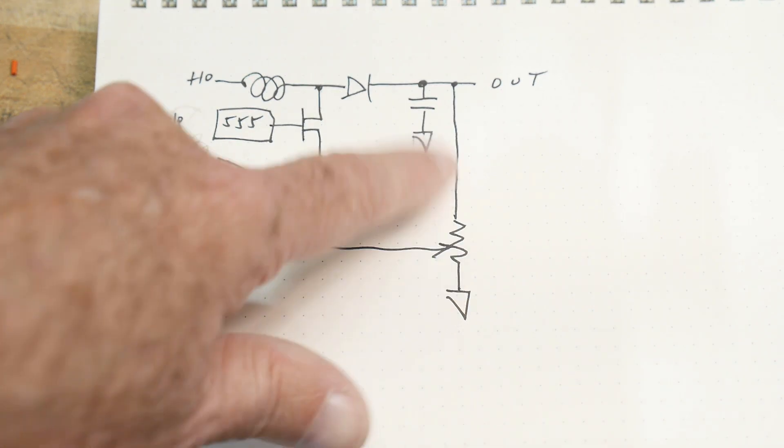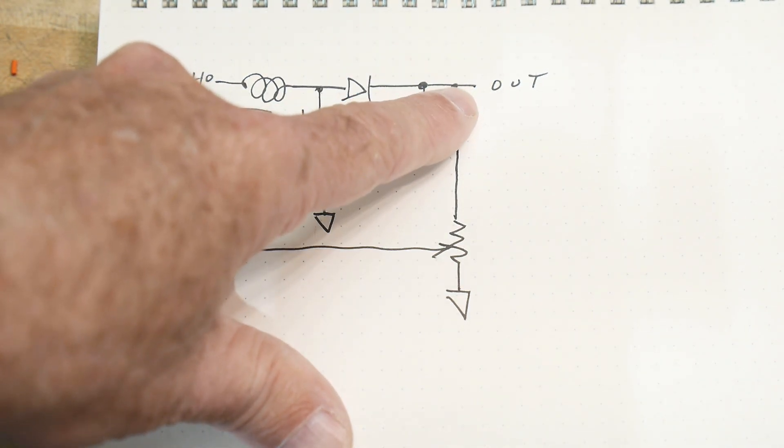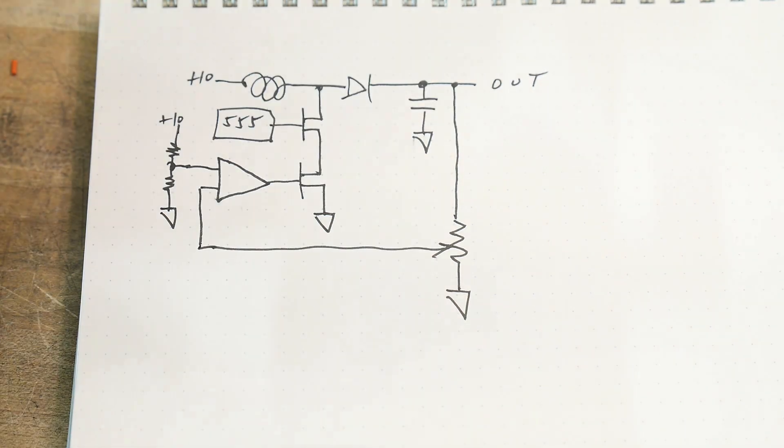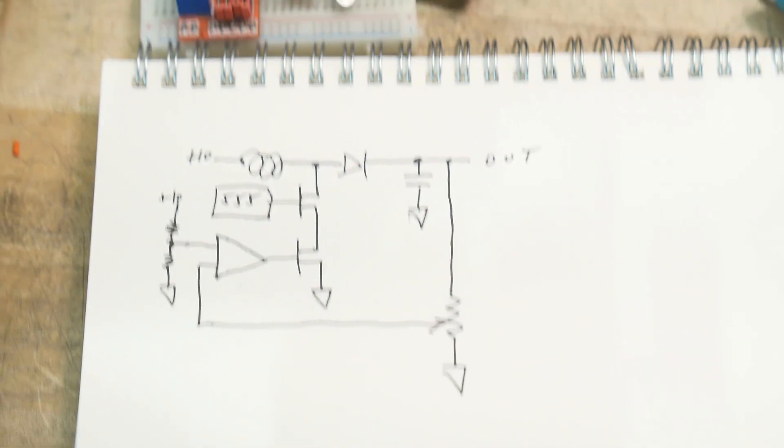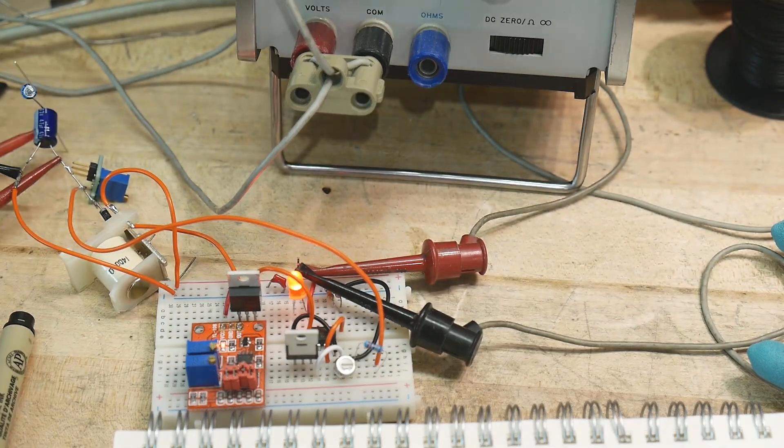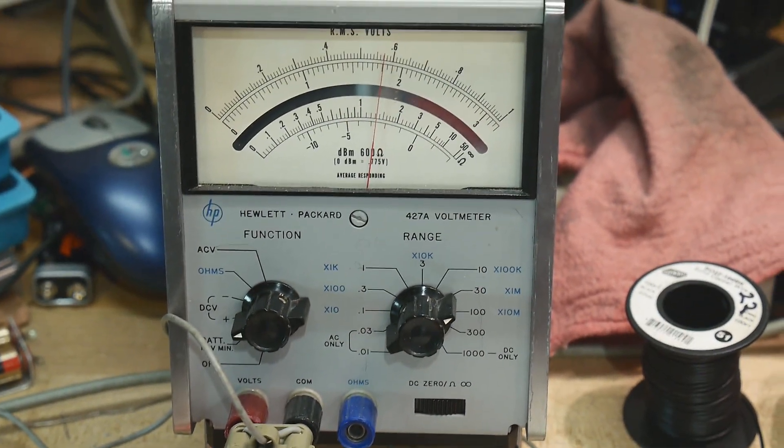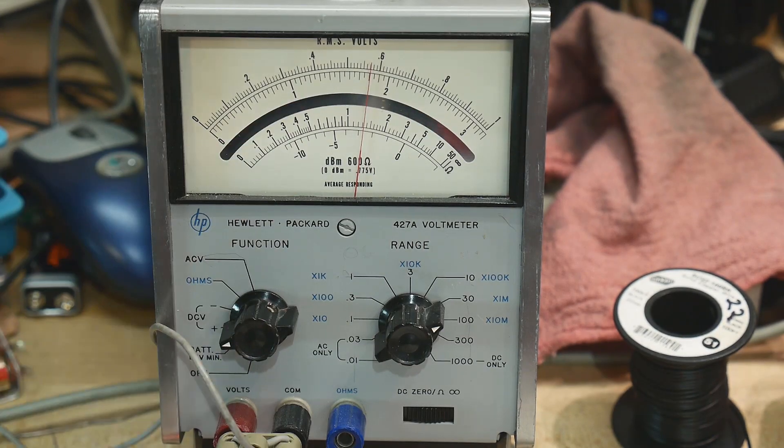So we can adjust this, and we should see the voltage change here, and it should stay stable. It shouldn't keep going up. So let's take a look. Here's all of our circuit. And here is our voltage.